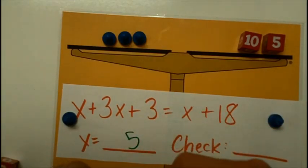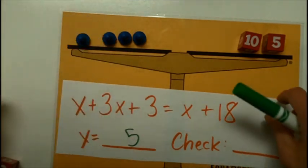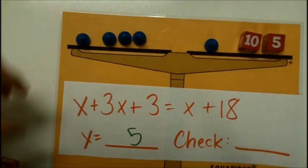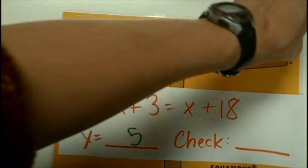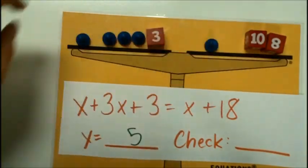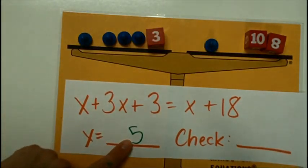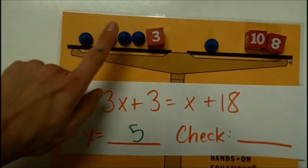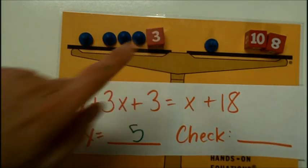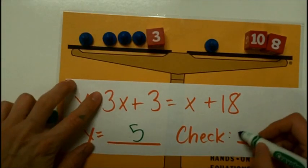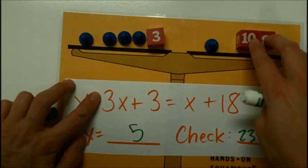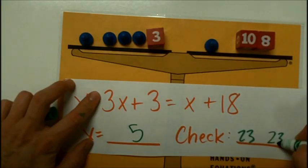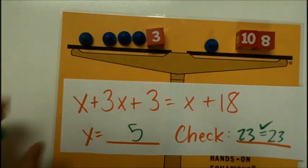And I'm going to go back to the beginning to check it. Put back a pawn on each side. Put back a 3 and change this back to an 18. Now I'm going to check it with the filling in of 5 for the value of x. 5, 10, 15, 23. The left-hand side equals 23. On this side, I started with 18. Plus 5 is 23. And it does check.